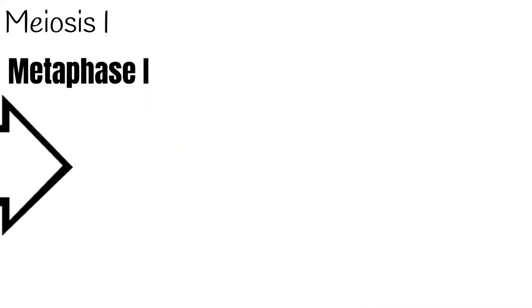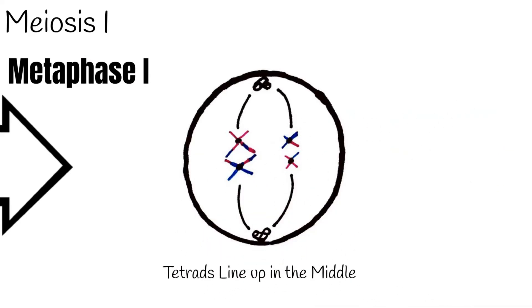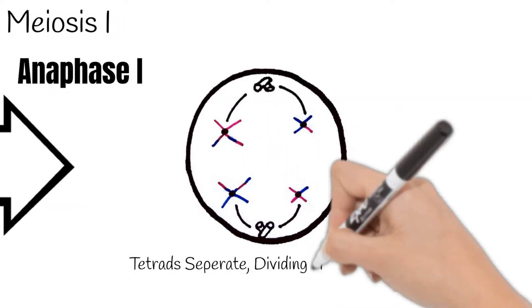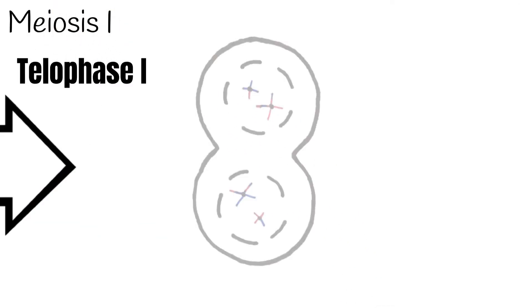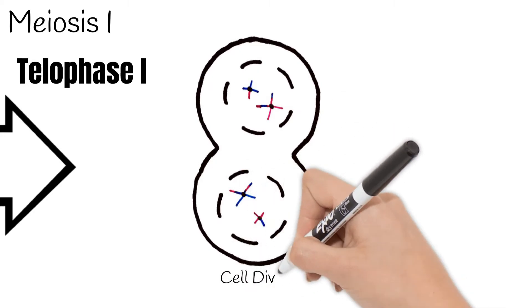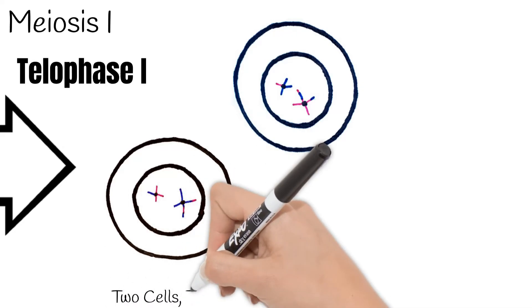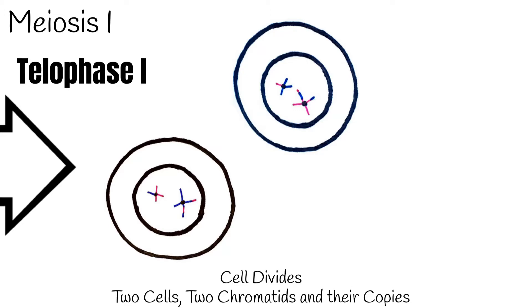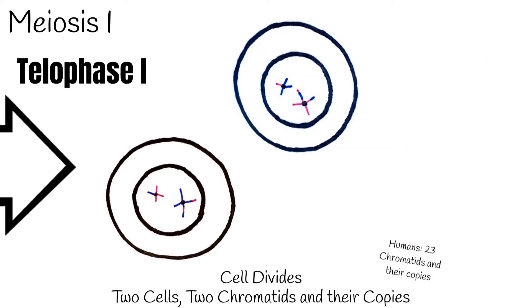In metaphase 1, we see the tetrads line up along the middle of the cell. Then, during anaphase 1, the tetrads separate, dividing the homologous chromosomes. Next is telophase 1, where the cell fully divides. Now we have two cells with two chromatids and their copies. In a human cell at this stage, we would have two cells with 23 chromatids and their copies.